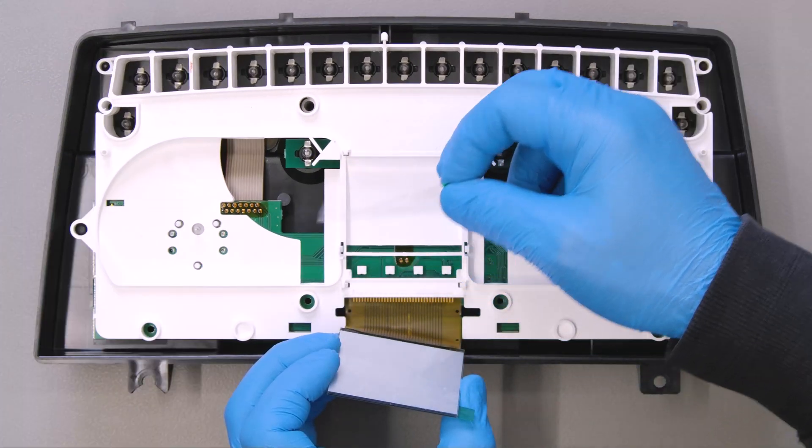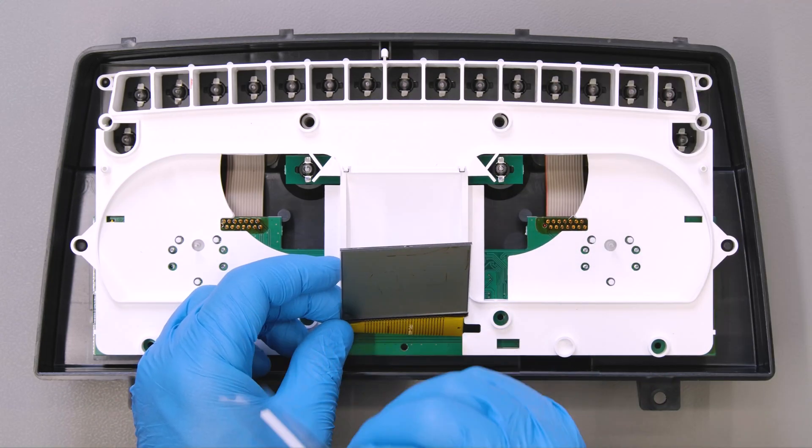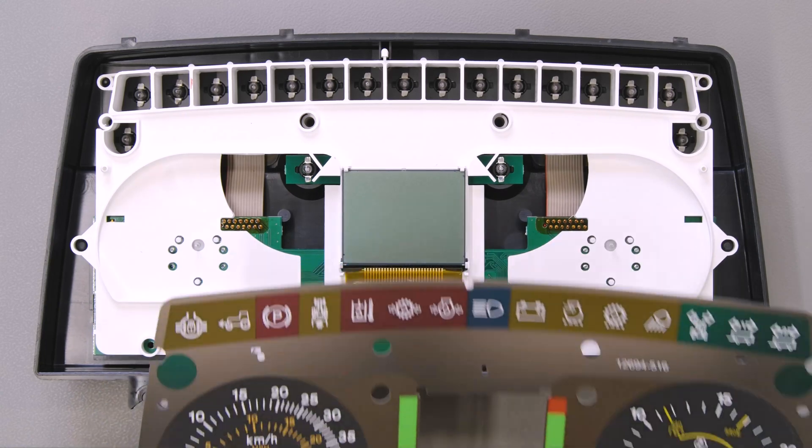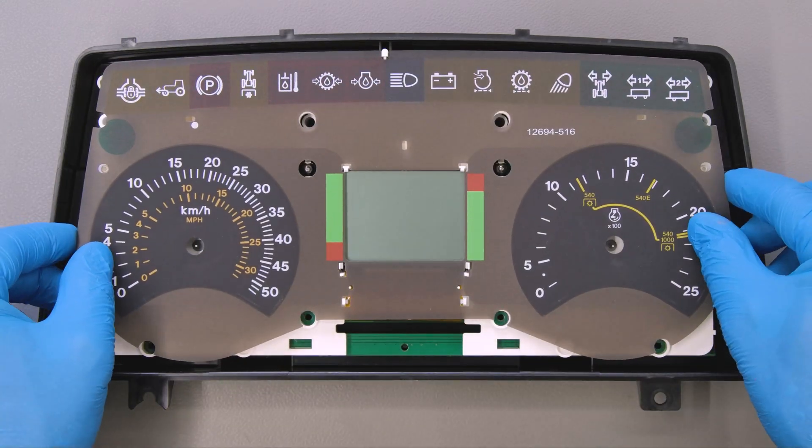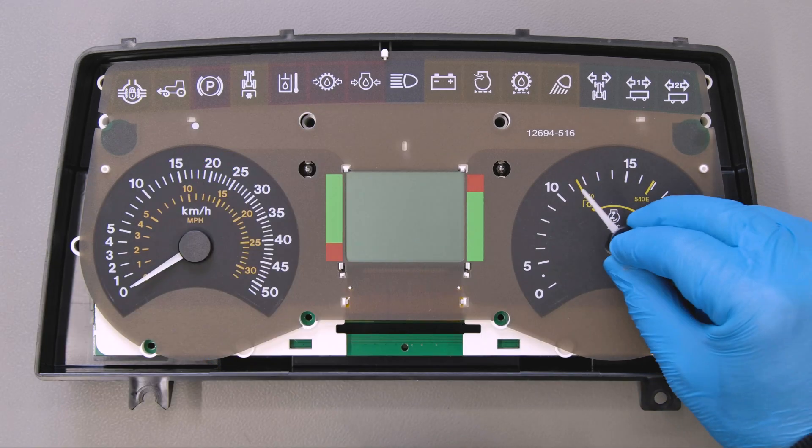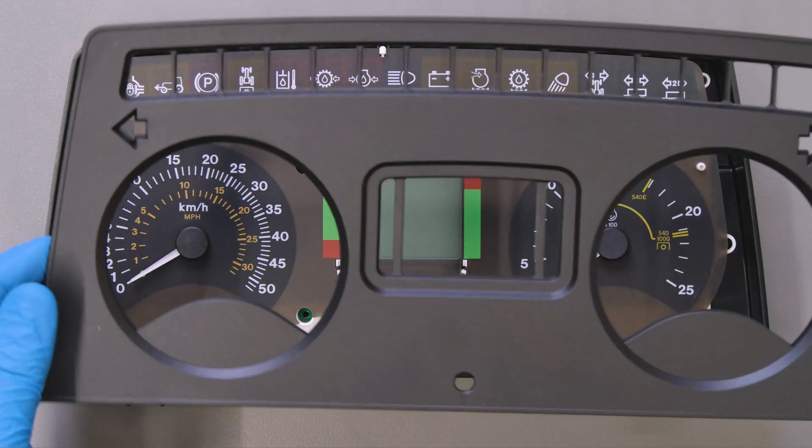Peel off the protective films from the Minitool's display and carefully secure it on its base. Refit the overlay. Put the needles back and bring them in their original position. Fit the front cover.